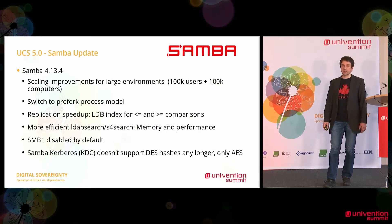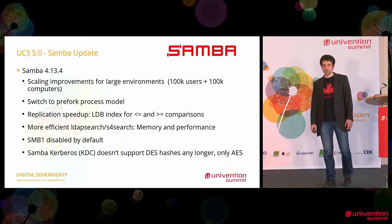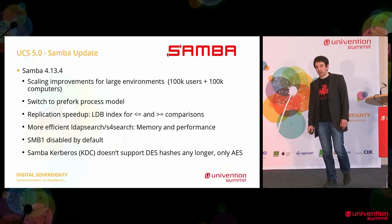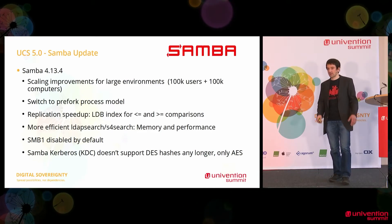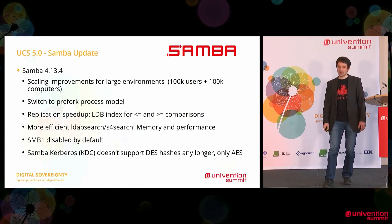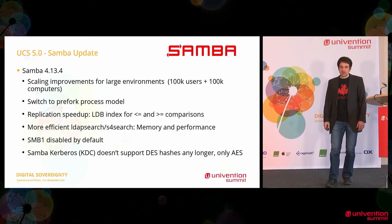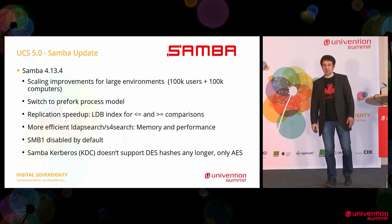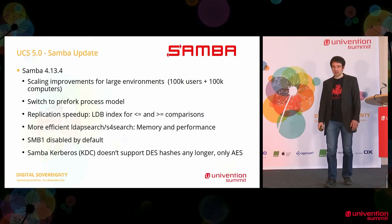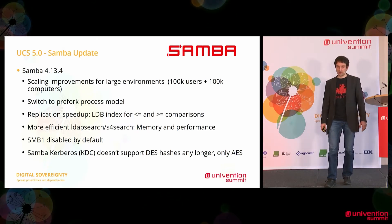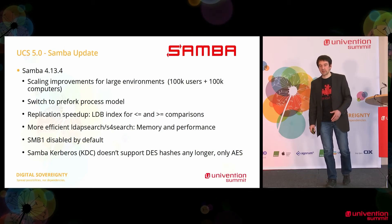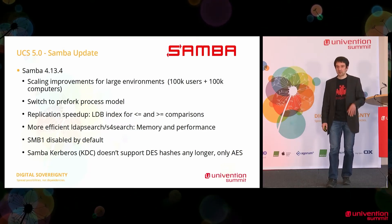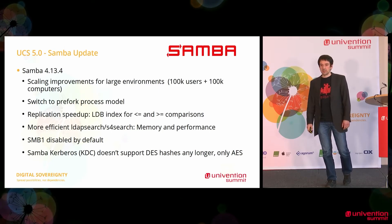Let's move up a level in the UCS 5 building. One of the frequent UCS components is domain-controlled Samba. UCS 5.0 updates Samba to version 4.13 — we're updating from 4.10 to 4.13. This new Samba update comes with improvements in terms of scaling for large environments. The Samba team indicates in their release notes figures of 100,000 users and 100,000 computers — so that's the ballpark figure.